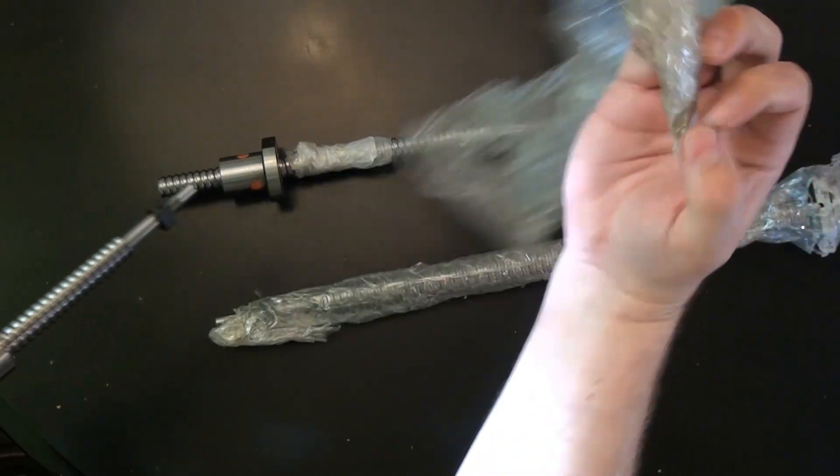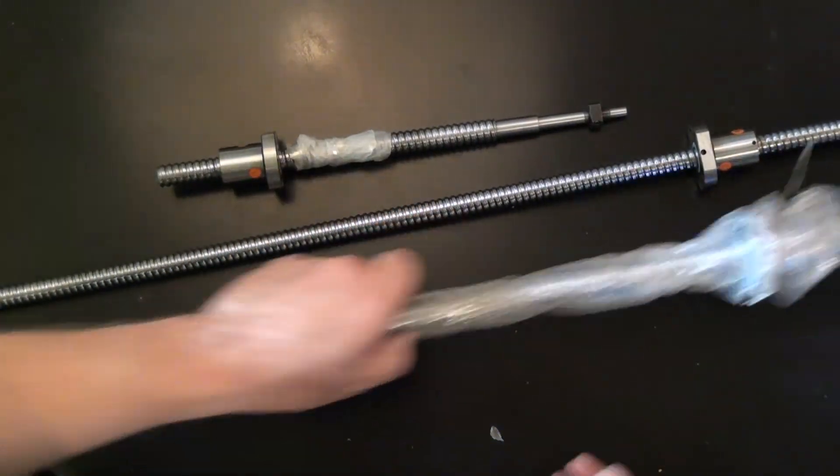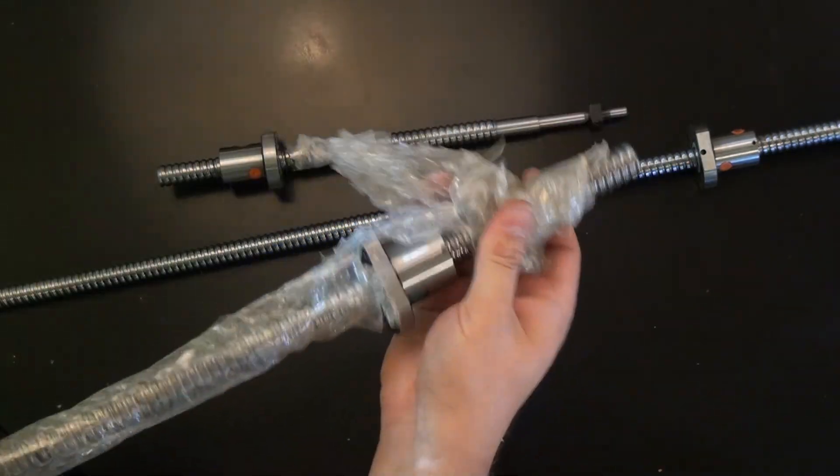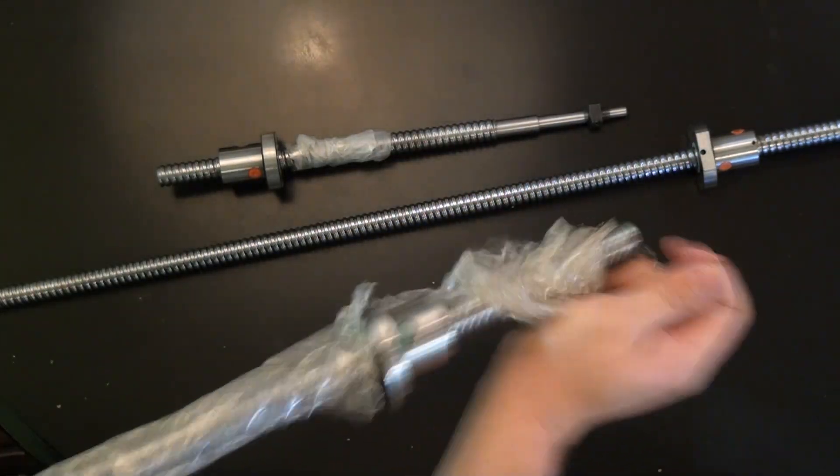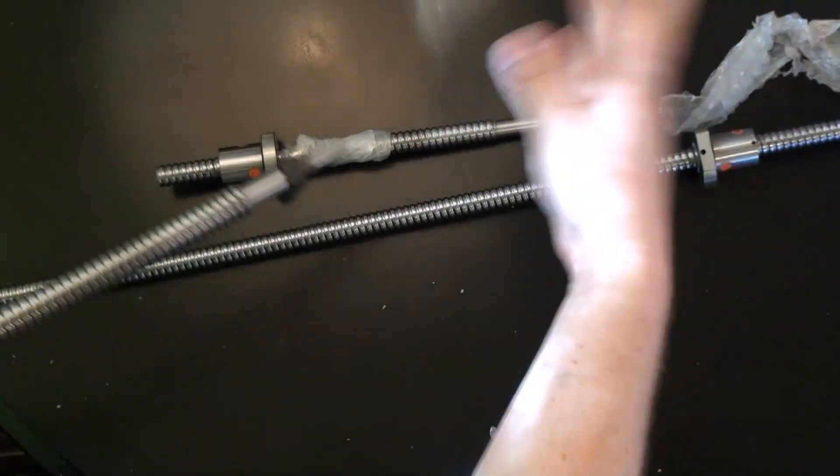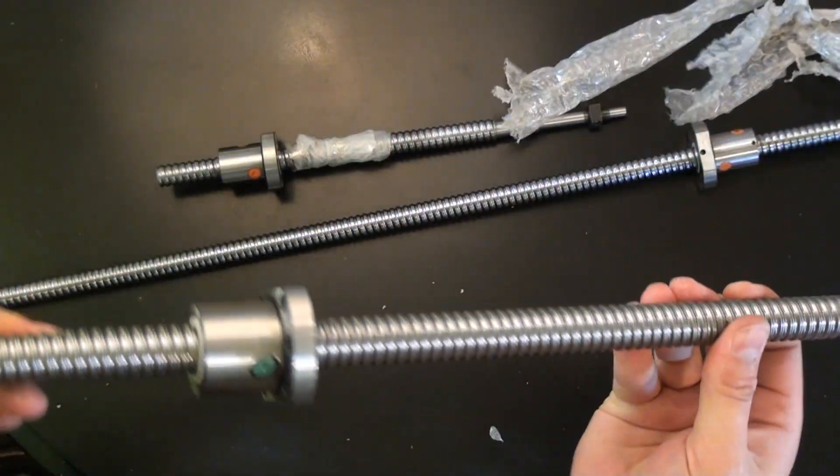because if you ever for some reason get the nut off the shaft and you're not prepared, the ball bearings will fall out. And I'm here to tell you it's a nightmare to get them back. There's information online and a video on YouTube that I watched on how to do it, but it still took me hours to get them back on the first time. Now I've done it a few times and it's actually not too bad.